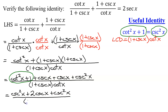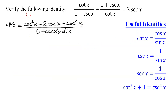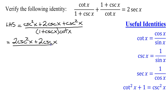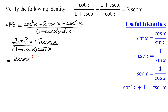All divided by 1 plus cosecant x times cotangent x. Continuing on the next slide: I have a cosecant squared x and another cosecant squared x in the numerator, so those combine to give 2 cosecant squared x plus 2 cosecant x, all divided by 1 plus cosecant x times cotangent x. I'm not where I want to be yet, but I'm seeing 2's appear, which is good. I can pull out a common factor of 2 cosecant x from the numerator.